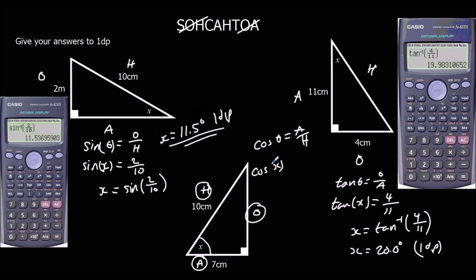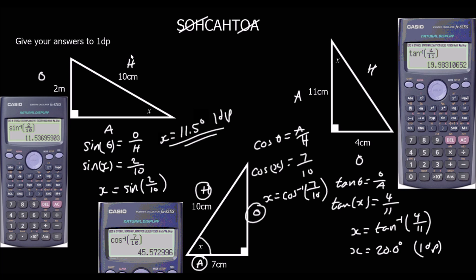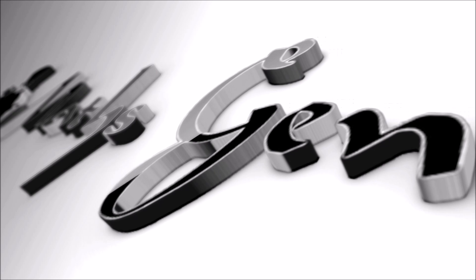Cos x in this example equals 7 over 10. To get cos away from x, we shift cos. So, shift cos 7 over 10. That's what we put in the calculator. Shift cos 7 over 10. 45.6. So, x is 45.6 degrees for this one. It's got a bit messy, but hopefully you can see which one's which.